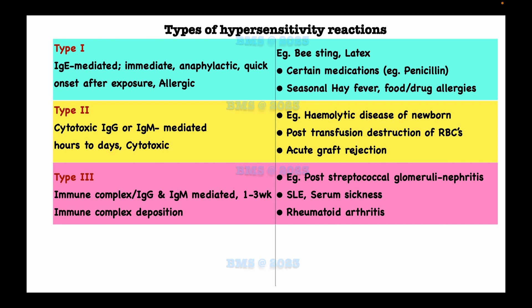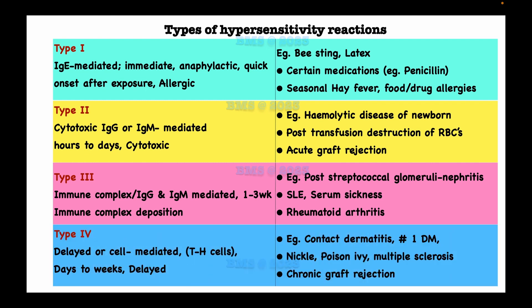The enzymes released from the neutrophils are what damage the cells and tissues. Examples of type 3 hypersensitivity reaction include post-streptococcal glomerulonephritis, systemic lupus erythematosus, serum sickness, and rheumatoid arthritis. Finally, type 4 hypersensitivity reaction is referred to as delayed hypersensitivity reaction and is mediated by T helper cells, occurring days to weeks later.